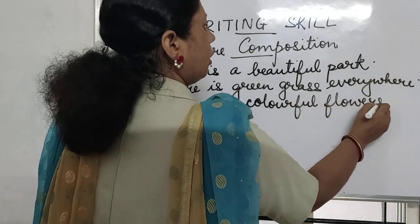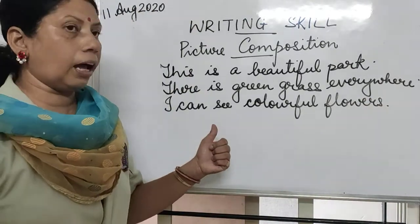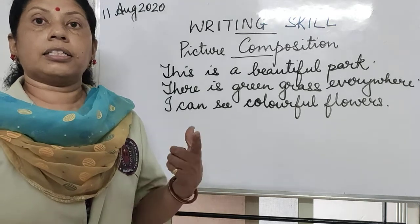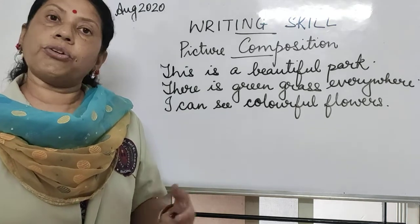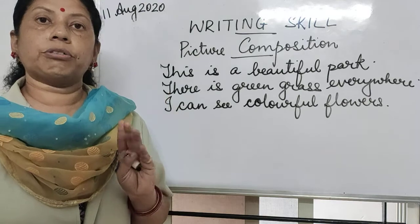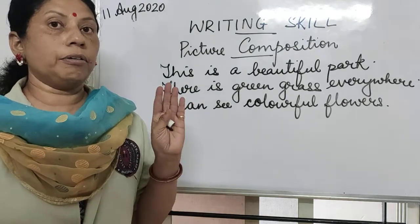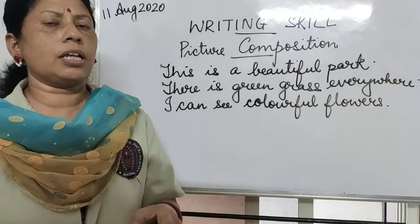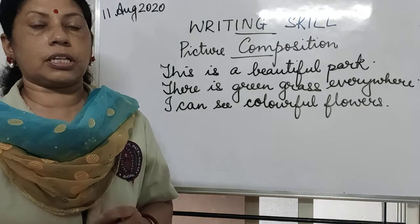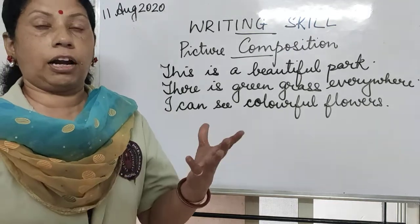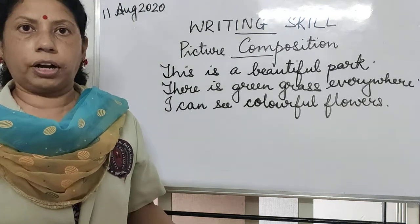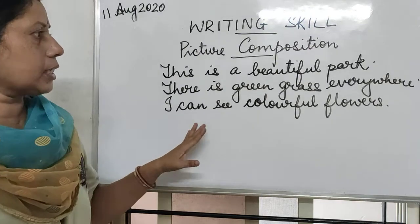You can also add sentences on your own — it is not necessary to write only what I am writing. You can write 'I can see marigold flower' or 'I can see dahlia flower.' But make sure your spelling is right. Take up simple words whose spellings you know very well. Once you learn the spelling of a word, it will be easy to write it down.